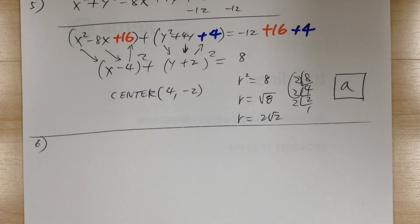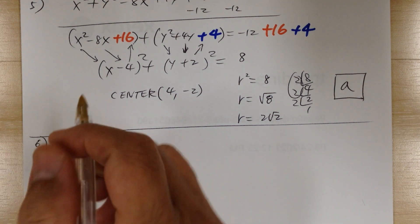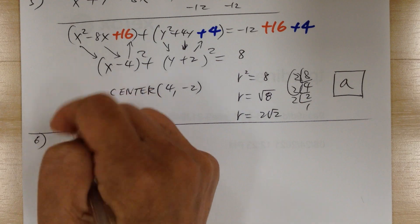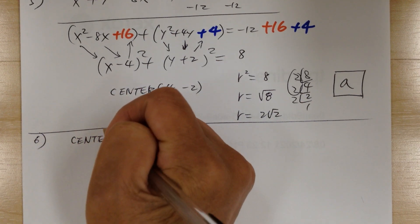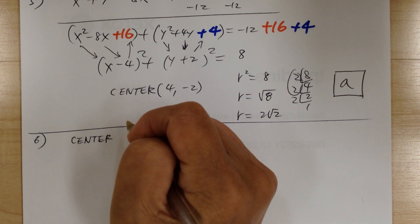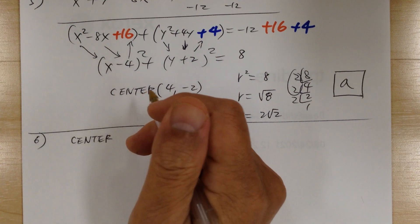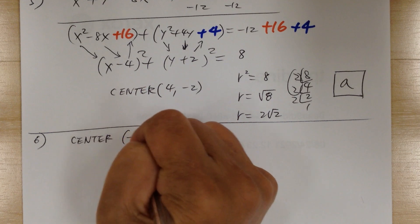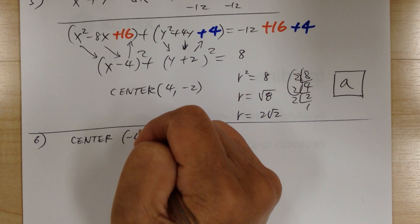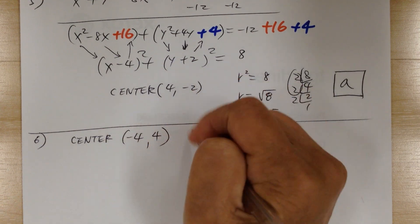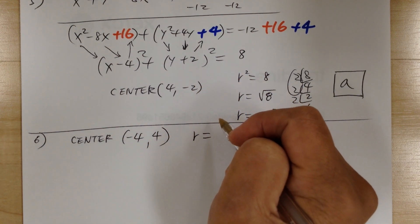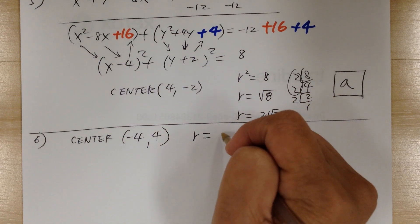Number 6: find the equation of the circle shown at the right. Looking at the picture, the center is going to be at negative 4, positive 4. For the radius, if you go straight up or down: 1, 2, 3, 4, 5 — so radius equals 5.